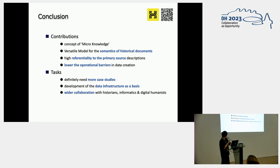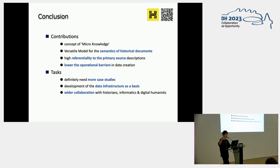So, conclusion. The contribution is that we introduce the concept of micro-knowledge, which is a versatile model for the semantics of historical documents. We guarantee high referentiality to the primary source description, and we lower the operational barrier in data creation. But there are still tasks. The first one is that we need more case studies because this is just the initial stage of our research — we need more data and case studies. Also, we need development of the data infrastructure as a basis, because we have to connect those entities to external data such as Wikidata or place data in the ancient world. So we need those kinds of authority data. And of course, doing this requires wider collaboration with historians, informatics, and digital humanists such as yourselves here.